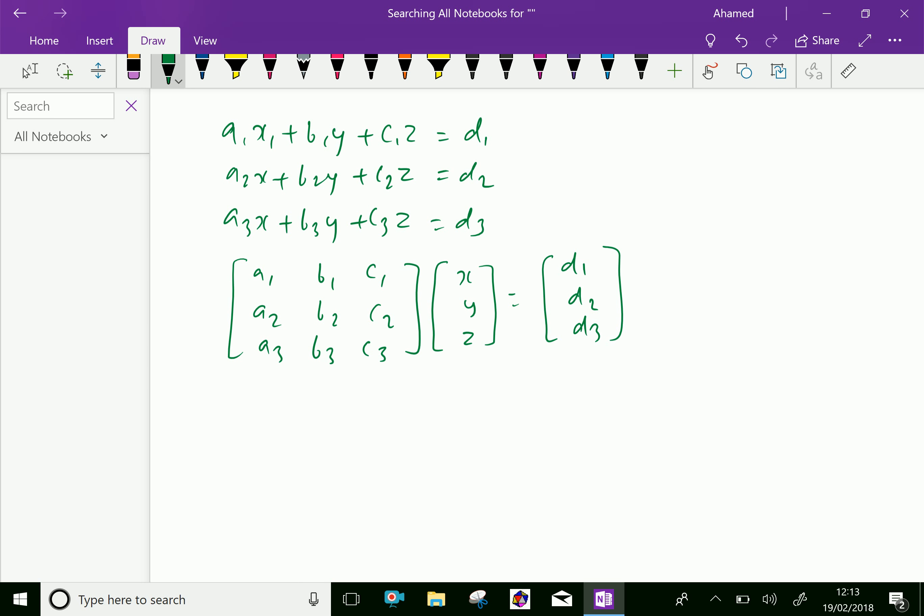We can write in terms of Ax equals B, where the matrix A is three by three order and x is three by one order and B also three by one order.